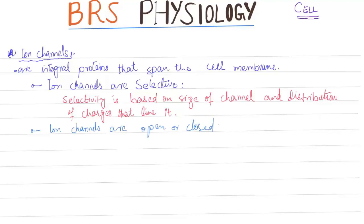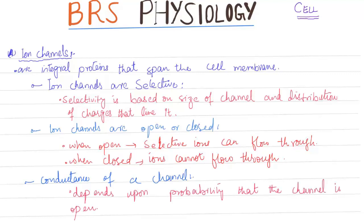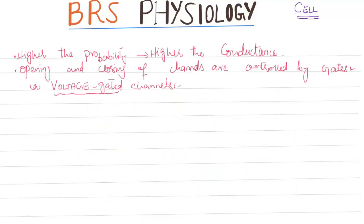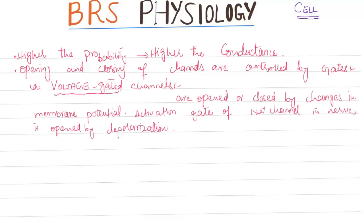Ion channels are open or closed. When open, selective ions can flow through; when closed, ions cannot flow through. Conductance of a channel depends on the probability that the channel is open — the higher the probability, the higher the conductance. Opening and closing is controlled by gates. Voltage-gated channels are opened or closed by changes in membrane potential. The activation gate of the sodium channel in nerve is opened by depolarization, making the membrane permeable to sodium. The inactivation gate of the sodium channel is closed by depolarization, making the nerve membrane impermeable to sodium during the repolarization phase.